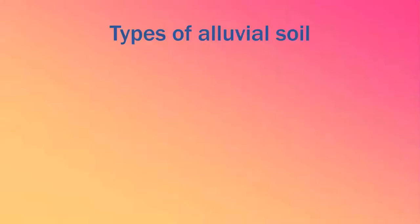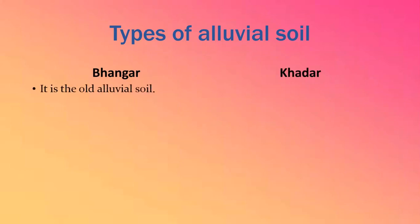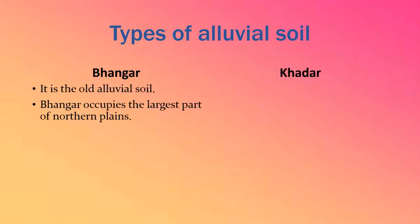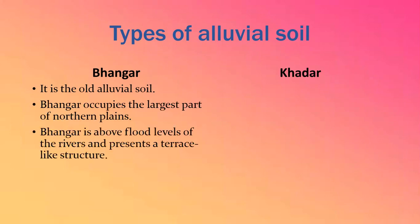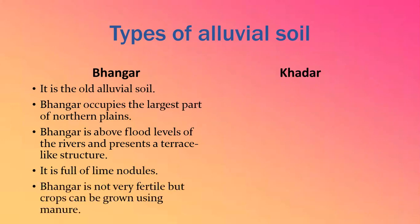Now let's understand the types of alluvial soil. There are two types: Bhangar and Khadar. Bhangar is the old alluvial soil. It occupies the largest part of the northern plains of India. Bhangar is above flood levels of the rivers and presents a terrace-like structure. It is full of lime nodules, also known as kunkars. Bhangar is not very fertile, but crops can be grown using manure.